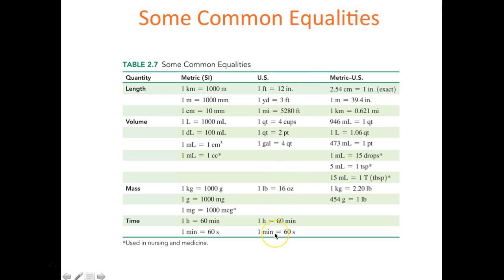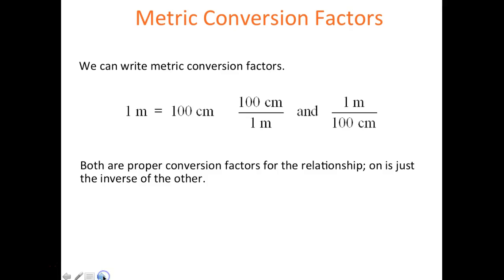Within the US system these equalities are exact. For metric-to-US conversions, they are considered measured. Whenever you see a 'one' in the equality it's exact, but values like 39.4 inches per meter have three sig figs, one kilometer equals 0.621 miles gives three sig figs, and 946 mL per quart also gives three sig figs.